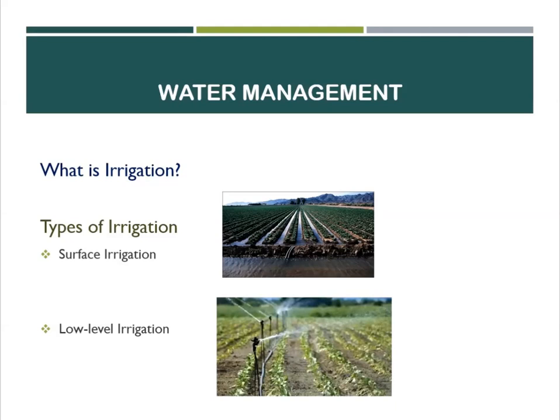Low-flow irrigation is to distribute water in small volumes, thus lessening runoff and water lagging. It maintains the quality of soil because it does not displace the topsoil, which is rich in nutrients. However, it is quite costly.